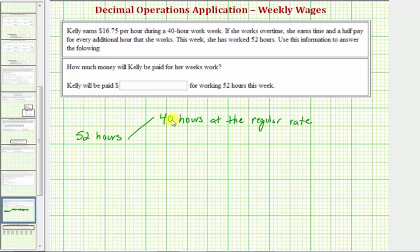And since 52 minus 40 equals 12, she worked 12 hours at a rate that is time and a half her regular rate. So 12 hours paid at time and a half.